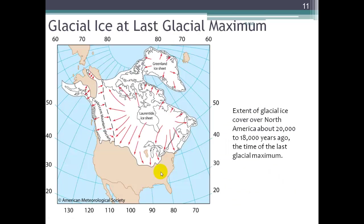Here is a glacial ice maximum. About 20,000 years ago, much of North America was covered in glaciers — we were in an ice age period. You can read in the textbook how the earth fluctuates between these glacial and interglacial periods and how that affects our weather.